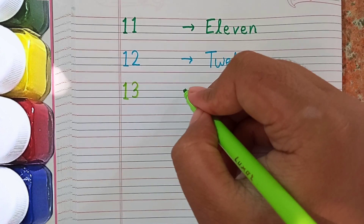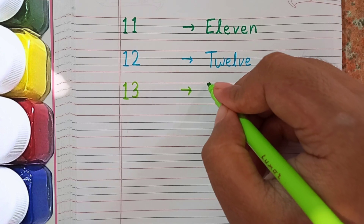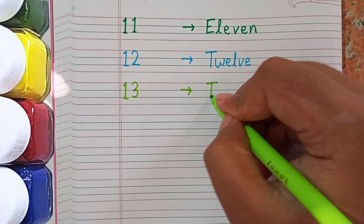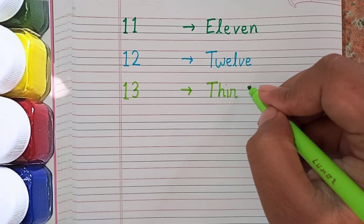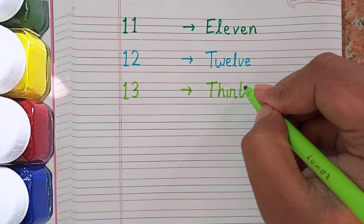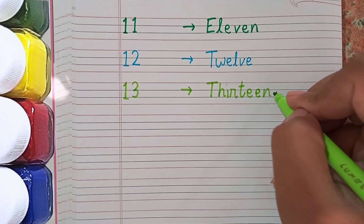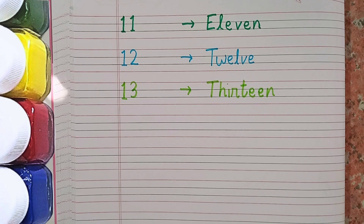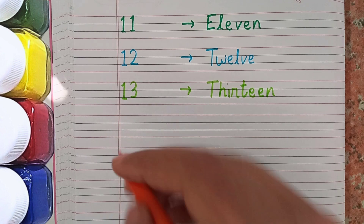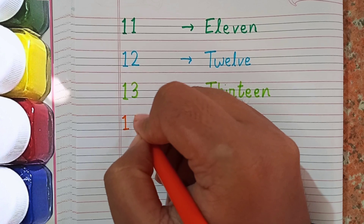After 12 I am going to write 13. This number is 13 and the spelling of 13 is T-H-I-R-T-E-E-N. The spelling of 13 is T-H-I-R-T-E-E-N.